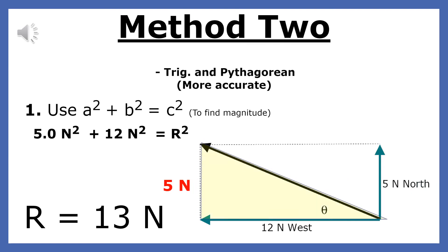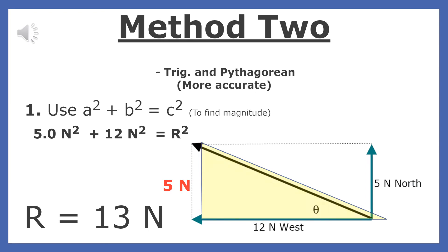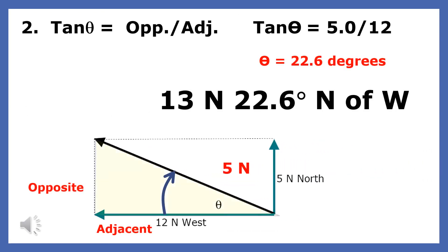The second method for finding the resultant when the angle between the forces is 90 degrees is to use the Pythagorean theorem and the trig function tangent. The resultant is the hypotenuse of a right triangle with a base of 12 newtons and a height of 5 newtons. The Pythagorean theorem gives us a resultant of 13 newtons. Since forces are vectors, we will need to use tangent to get the angle. Tangent is opposite over adjacent, and the inverse tangent of 5 divided by 12 is 22.6 degrees. So the resultant is 13 newtons, 22.6 degrees north of west.